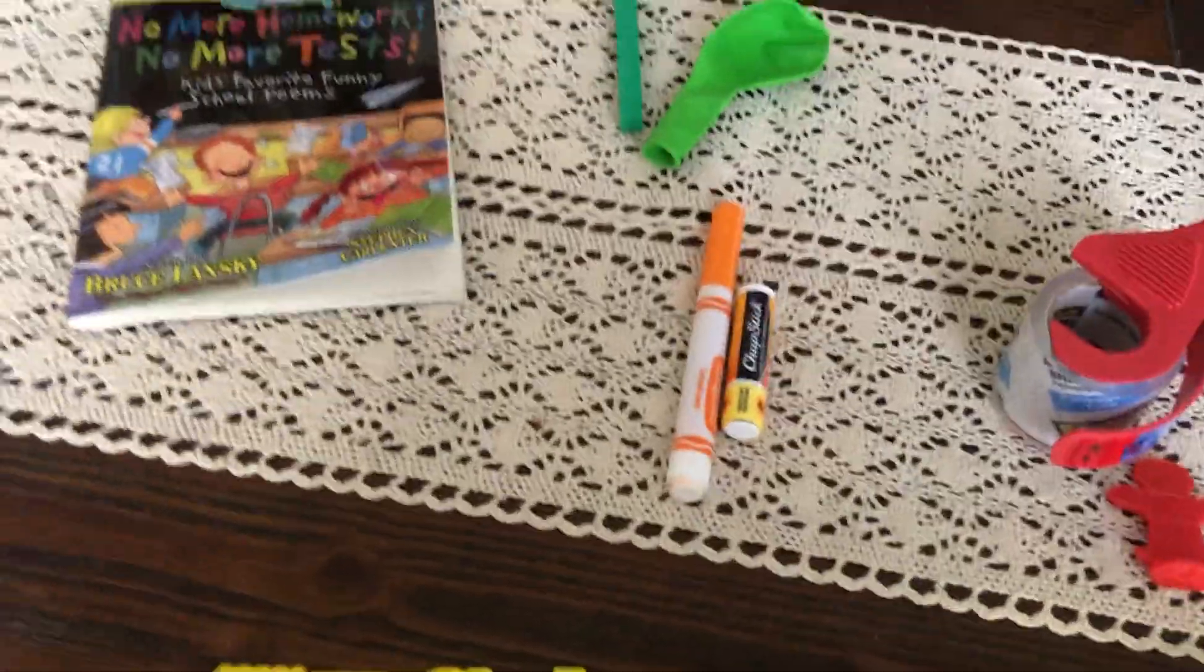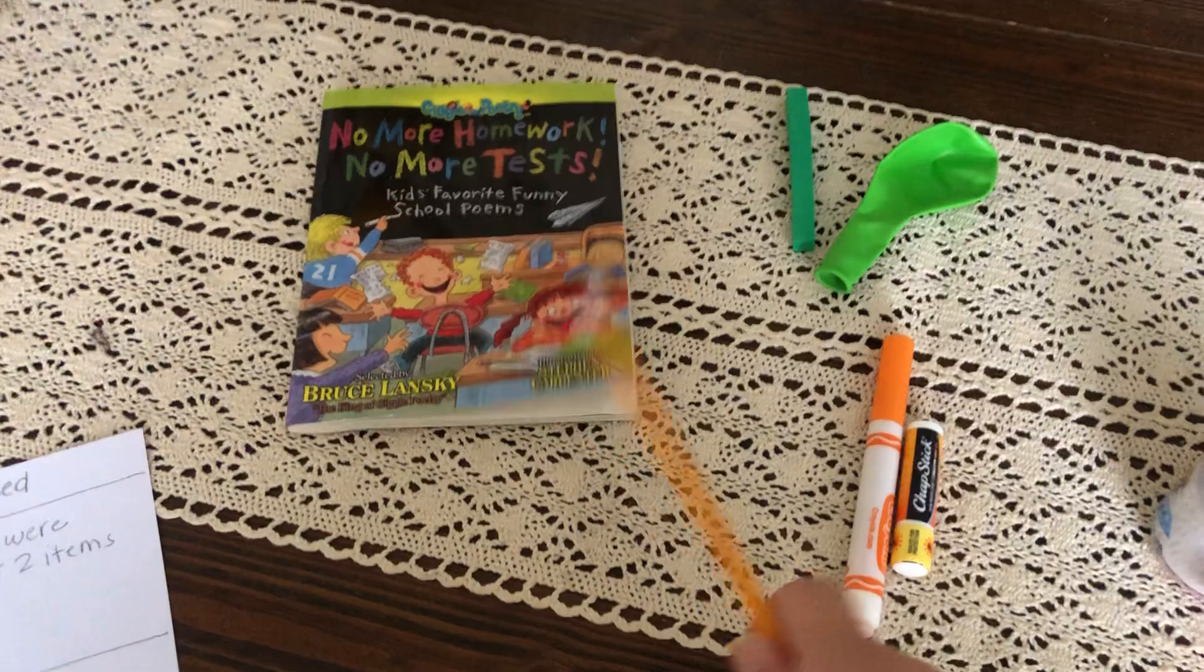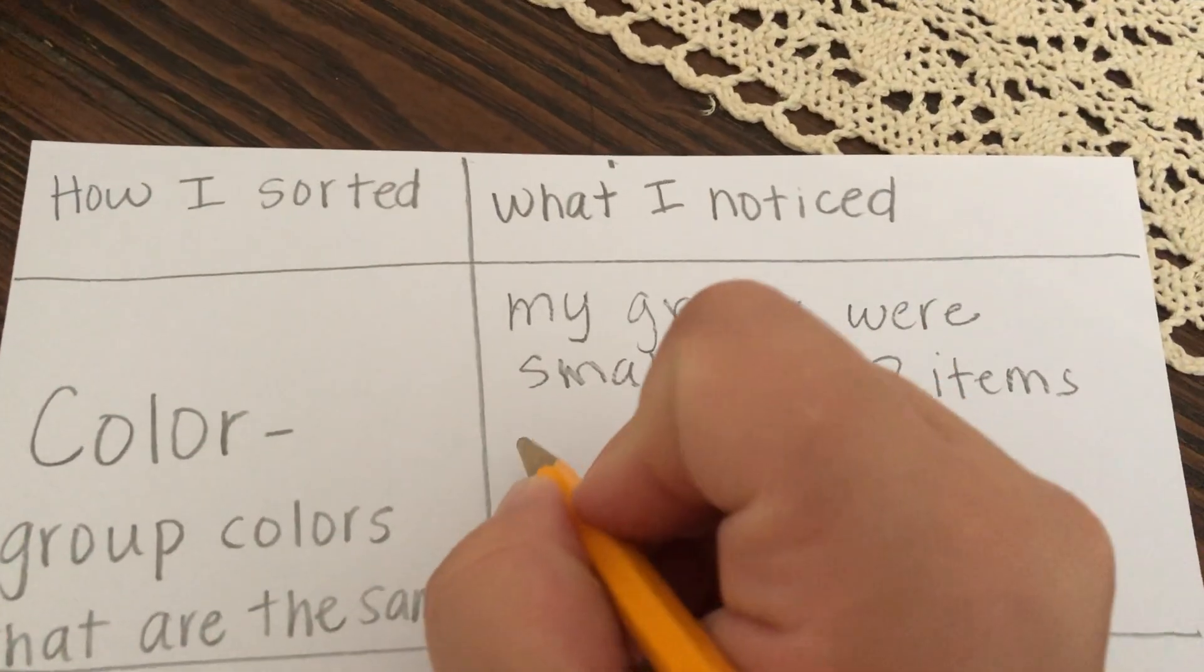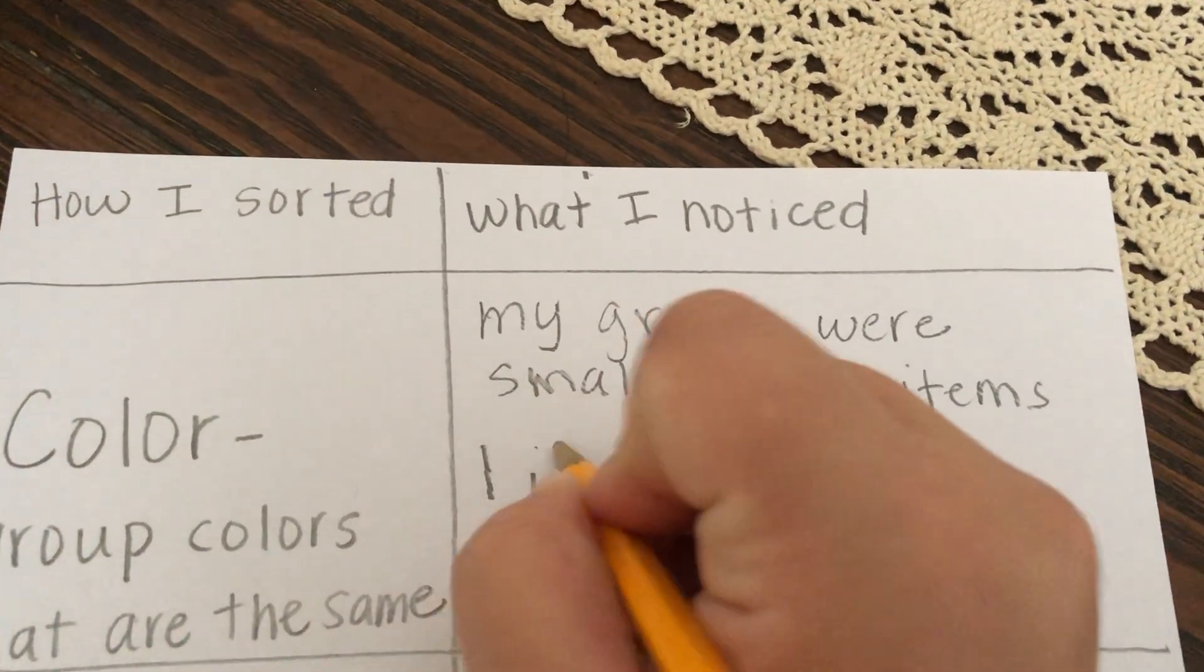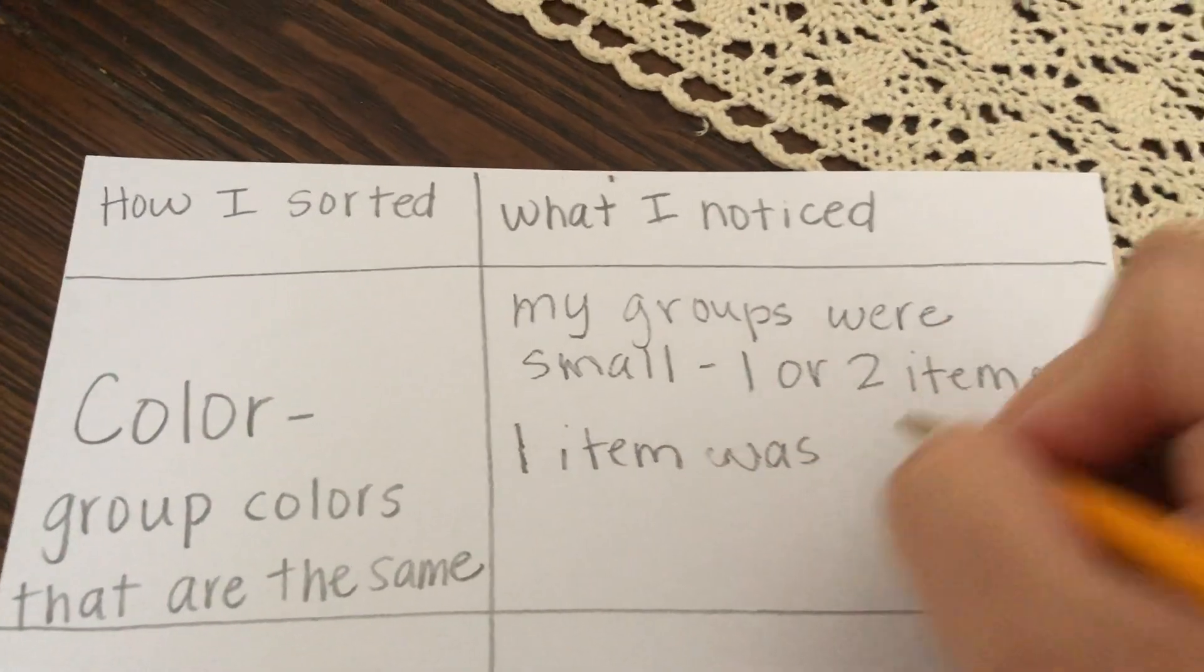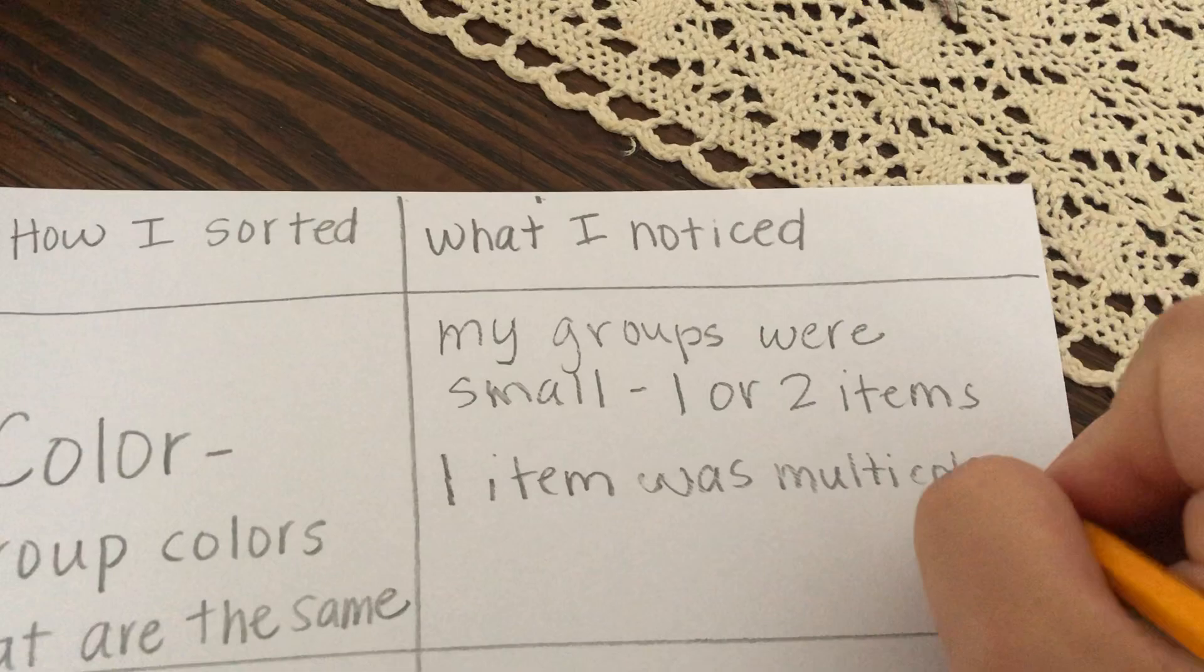What else can I notice about the color of these objects? I think I'm going to write down that I had one object that was multicolored. So it had more than one color, just because I thought that was interesting. So I'm going to say one item was multicolored.